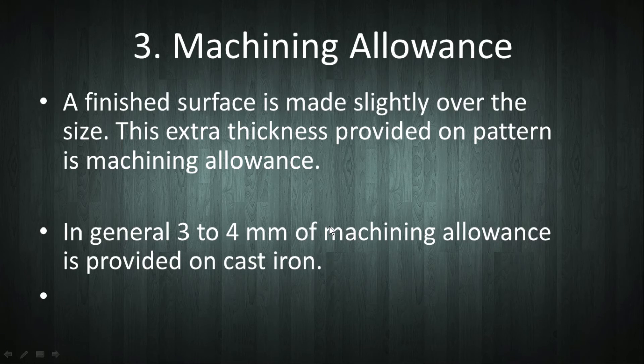You can see the draft allowance in terms of taper in the diagram. The next allowance is machining allowance. Surfaces which are required to be machined for better surface finish are made slightly over the required size. The extra thickness provided on such surfaces is called machining allowance. In general, for cast iron, 2 to 4 mm machining allowance is provided, but it depends upon the type of molding used for casting the part.